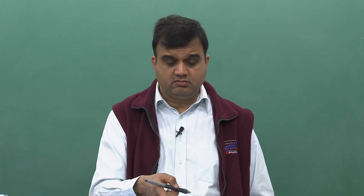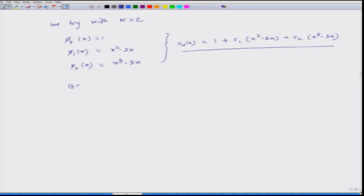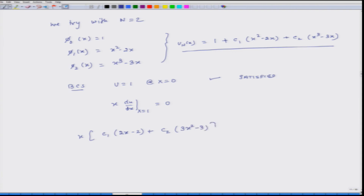Now we see whether this function meets the boundary conditions. The first BC is u equals 1 at x equals 0 — we put x equals 0 in the entire function and it is satisfied. The second boundary condition is x times du/dx at x equals 1 equals 0. We differentiate the equation and multiply by x, getting x times (c_1(2x minus 2) plus c_2(3x squared minus 3)), and the value at x equals 1 comes out to be 0. So both boundary conditions are satisfied.